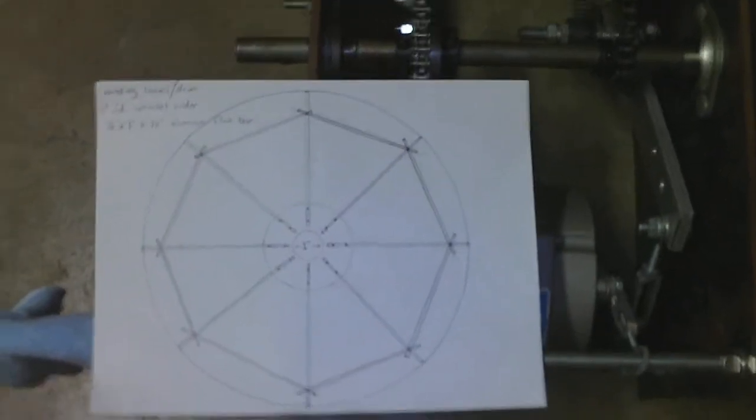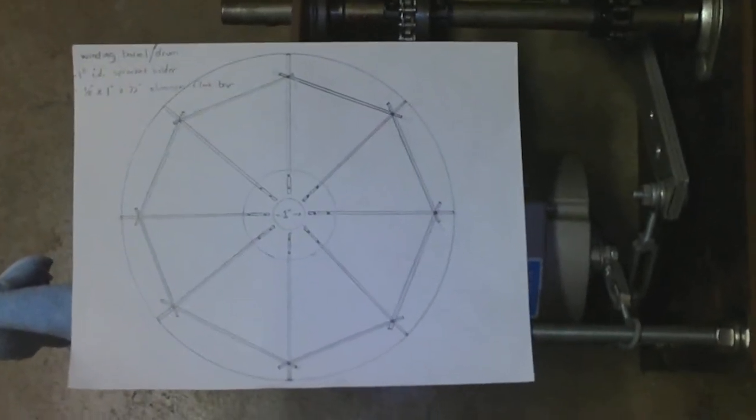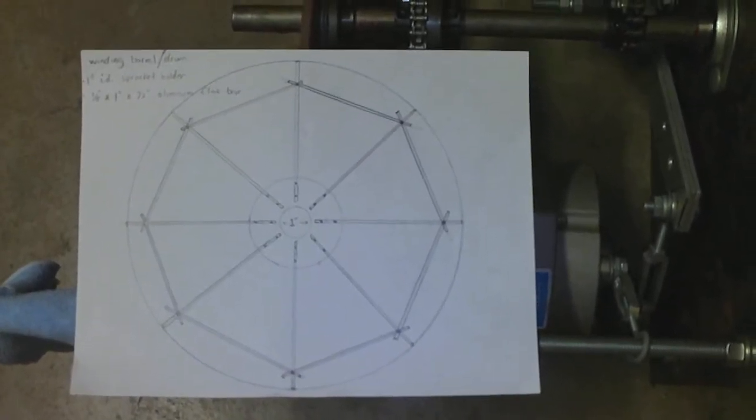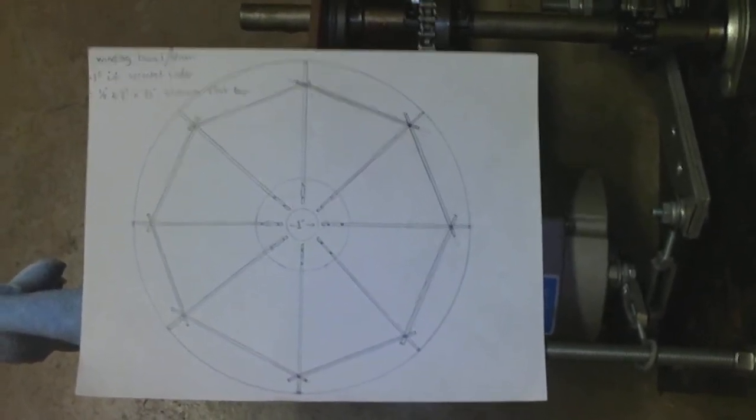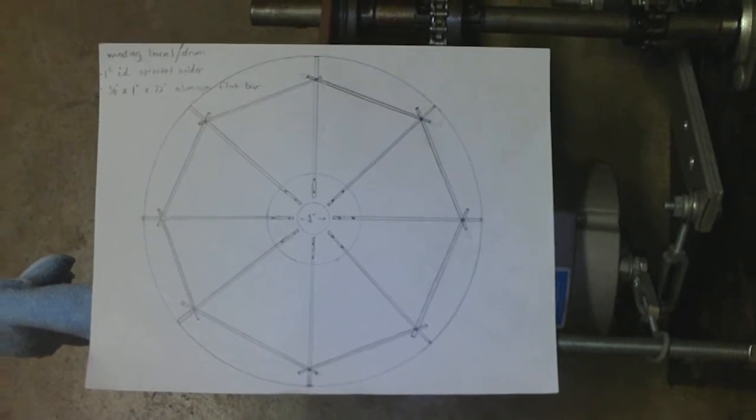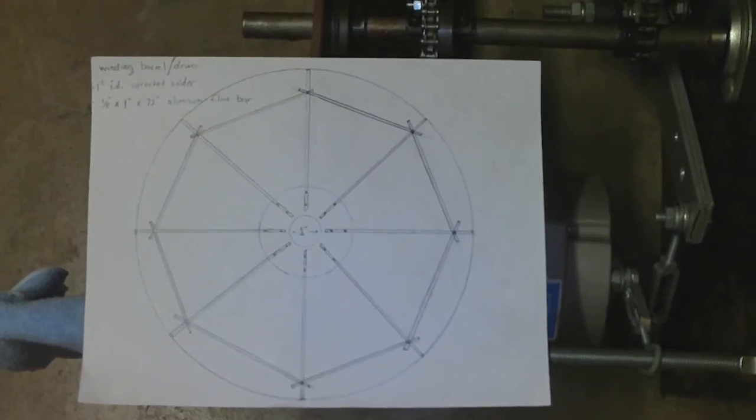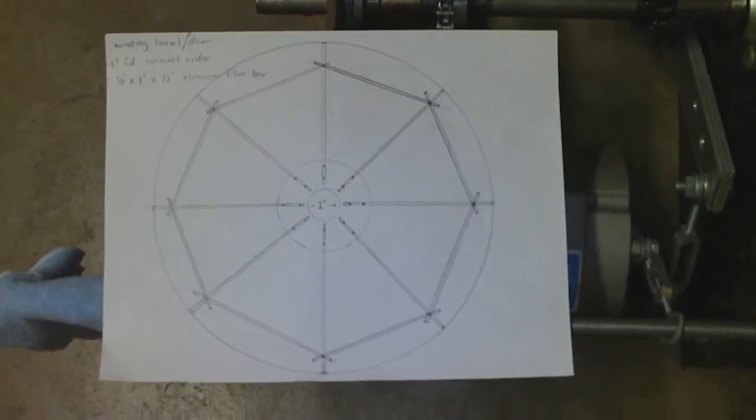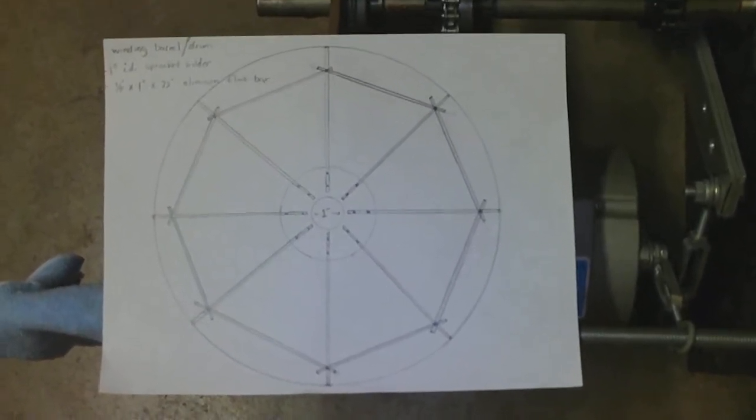This is a drawing of what we call the winding barrel or winding drum, and the cable's going to wrap around, and the weight will hang from this. So, there's a faint line all around the outside, and then you see all these kind of stick figures and a centerpiece to it.